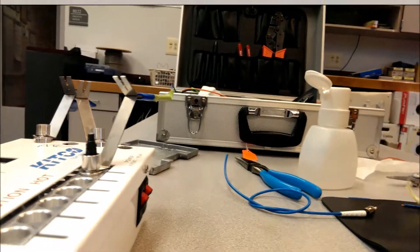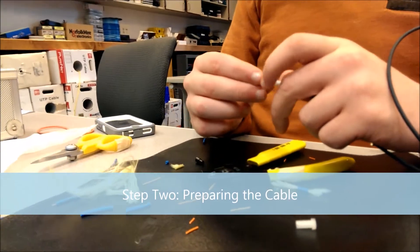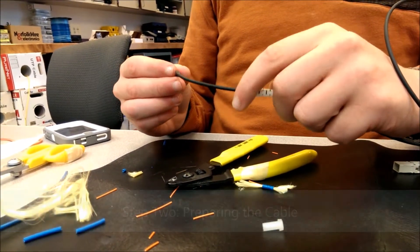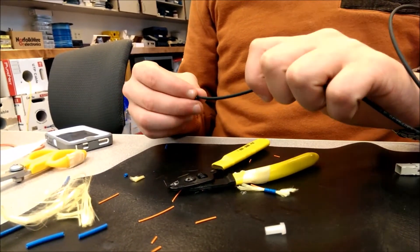That takes about five minutes to heat up. We are going to put the strain relief boot on and the crimp ring, which we will not be using until later on after all the other steps have been complete.